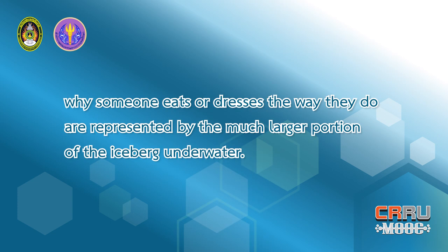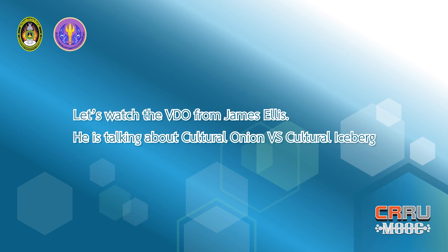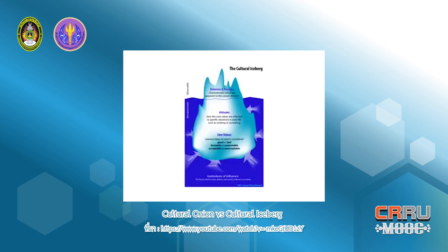To sum up, elements of culture which we can plainly see, such as food or clothes, are represented by the upper portion of the iceberg. Those elements which are not as obvious — such as why someone eats or dresses the way they do — are represented by the much larger portion of the iceberg underwater. The cultural iceberg is split into two segments: observable and not observable. The observable segment is above the water, because it's something visual, like behavior or practice — the clothes you wear or the music you listen to. Not observable is below the water, because it's much more subtle, like your attitude towards something or core values.